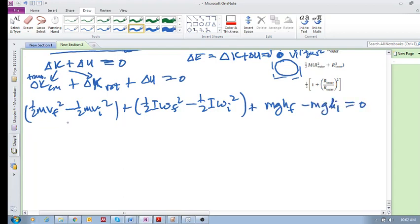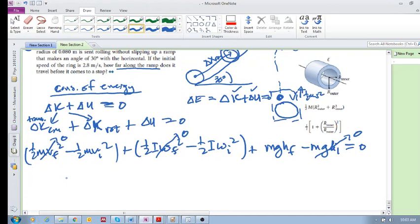What is the final velocity? That's zero because it's come to a stop. What's the final rotational velocity? That's also zero. And what is the initial height? That's also zero. So we're basically left with minus half mv initial squared minus half I omega initial squared is equal to minus mgh final. We can just make these positives.